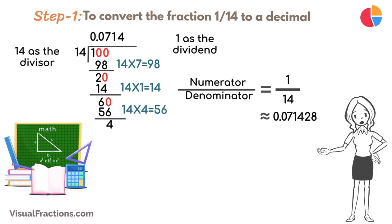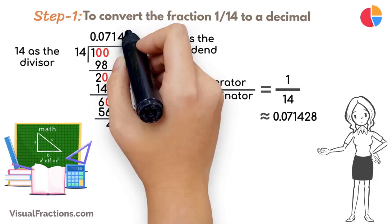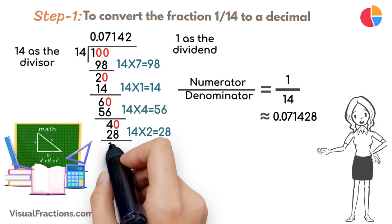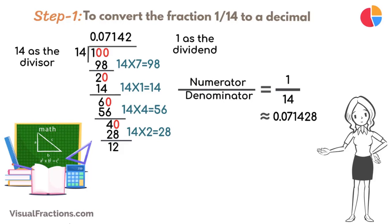Again, bring down a 0 to make it 40. 14 goes into 40 twice, updating the quotient to 0.07142. Multiply 14 by 2 to get 28, and subtract this from 40, leaving a remainder of 12. As this process continues, consistently bringing down zeros, the remainders cycle through, indicating a repeating decimal sequence. This shows that the quotient will continue to extend as 0.071428, and so forth.